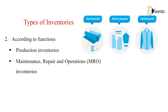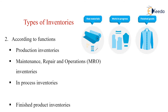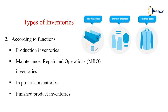As per the functions, we are having the production inventories, maintenance repair and operations inventories, in-process inventories, and the finished product inventories. For example, we have this example where directly the cloth pieces or the yarn from the cloth pieces — cut pieces of cloth — are stitched and made into the finished goods of shirts, pants, and garments which are being required.